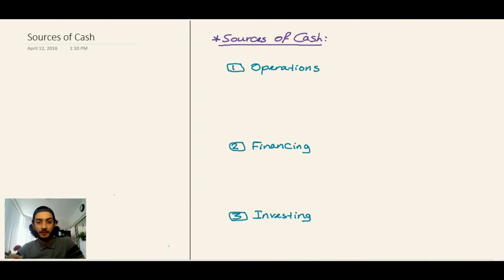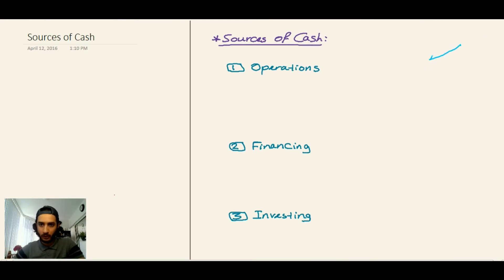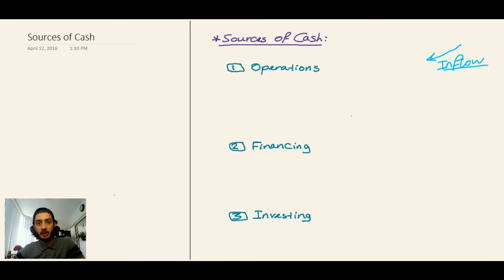Hi, we'll talk in this video about the sources of cash, the inflow of cash and the outflow of cash. So in this slide I will talk about the inflow of cash. It is important to try to understand this video because it will help you later when we talk about the cash flow statement. So the sources of cash for any company are three major categories.